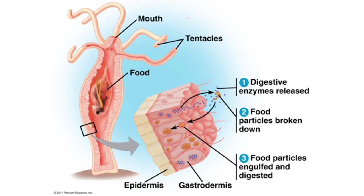After killing the prey, hydra grasps it with the tentacles and pushes it into the digestive cavity — the gastrovascular cavity — through the mouth. Once the prey is inside the gastrovascular cavity, the process of ingestion is completed and the process of digestion begins.